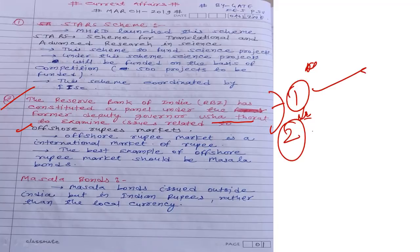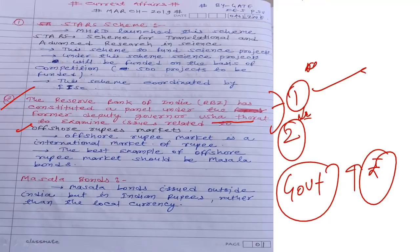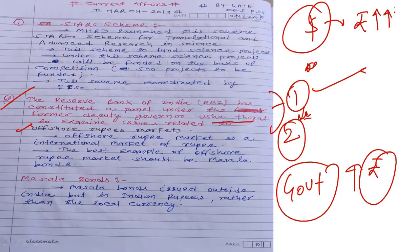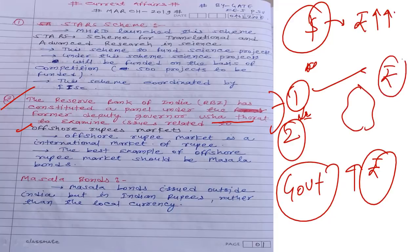The offshore rupee market refers to the value of the Indian rupee outside Indian territory — for example, what is the rupee's value in America or Sri Lanka. The government wants to increase the rupee's value internationally. There are two terms: offshore rupee market (rupee value outside India) and onshore rupee market (rupee value inside India).